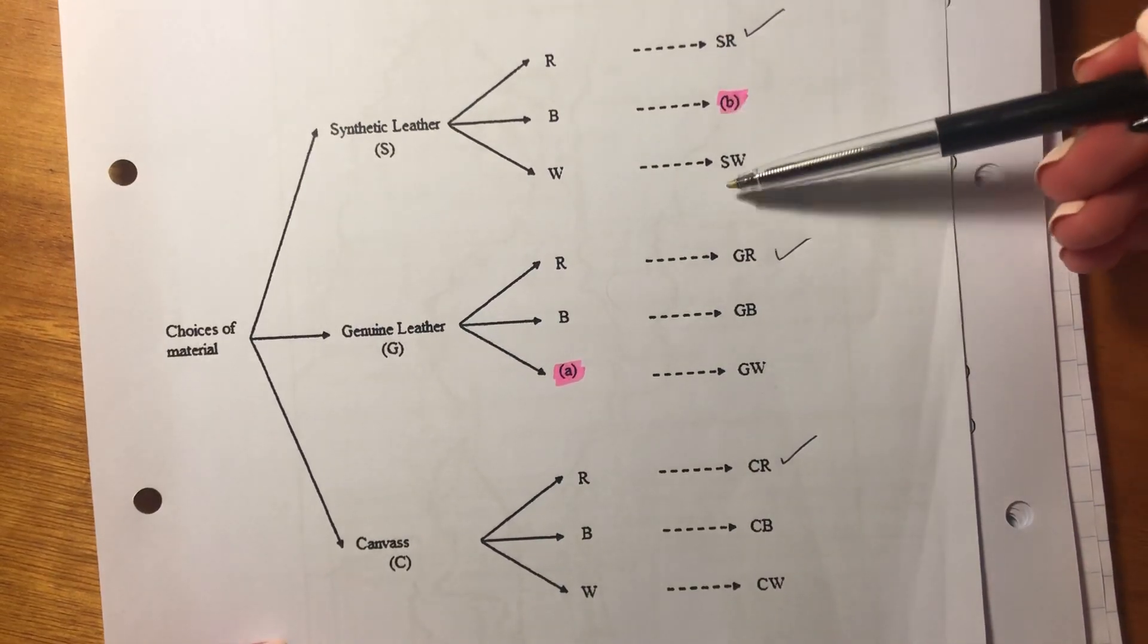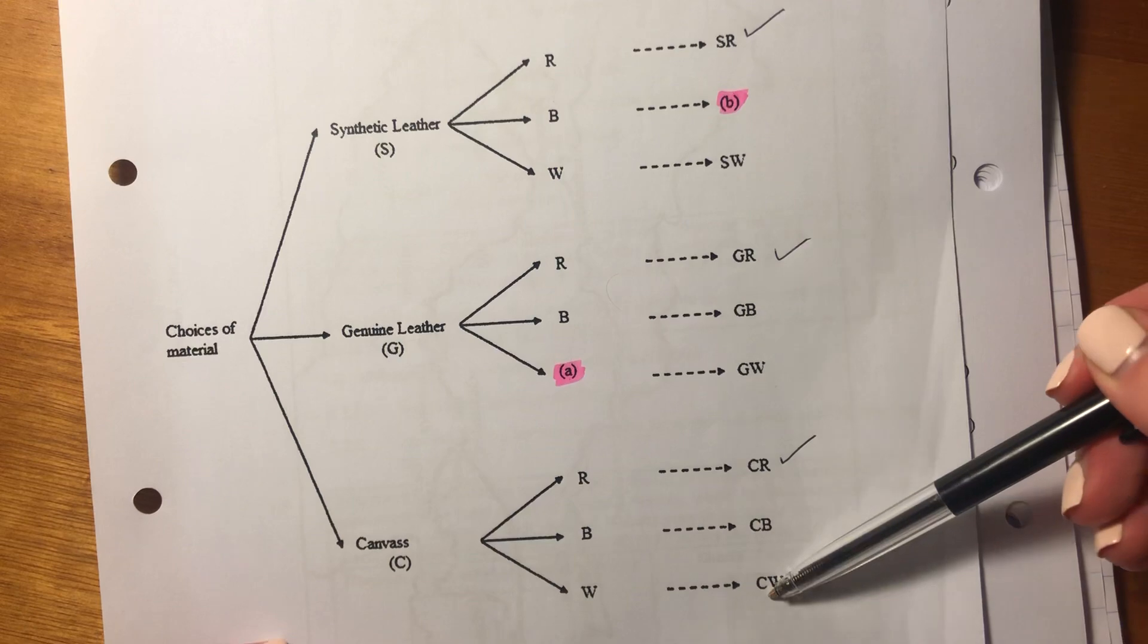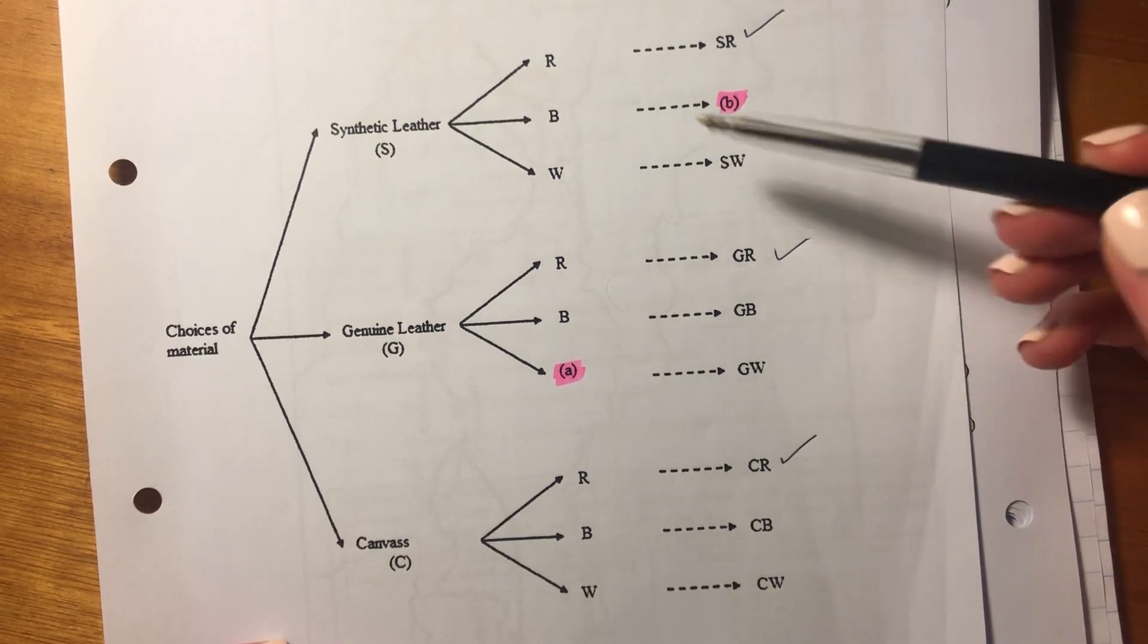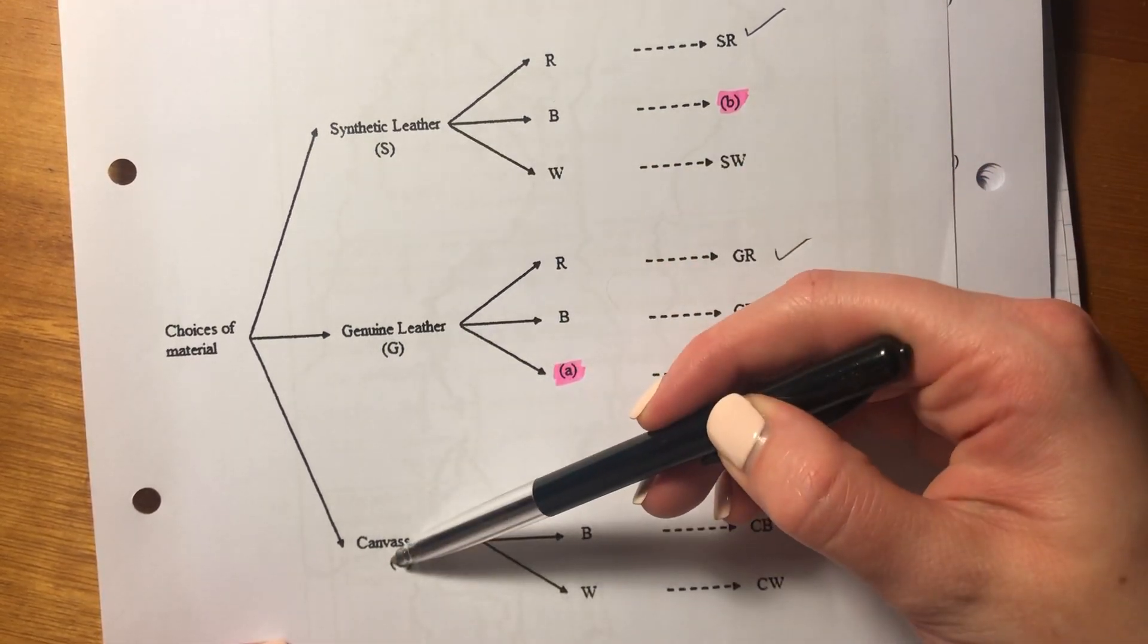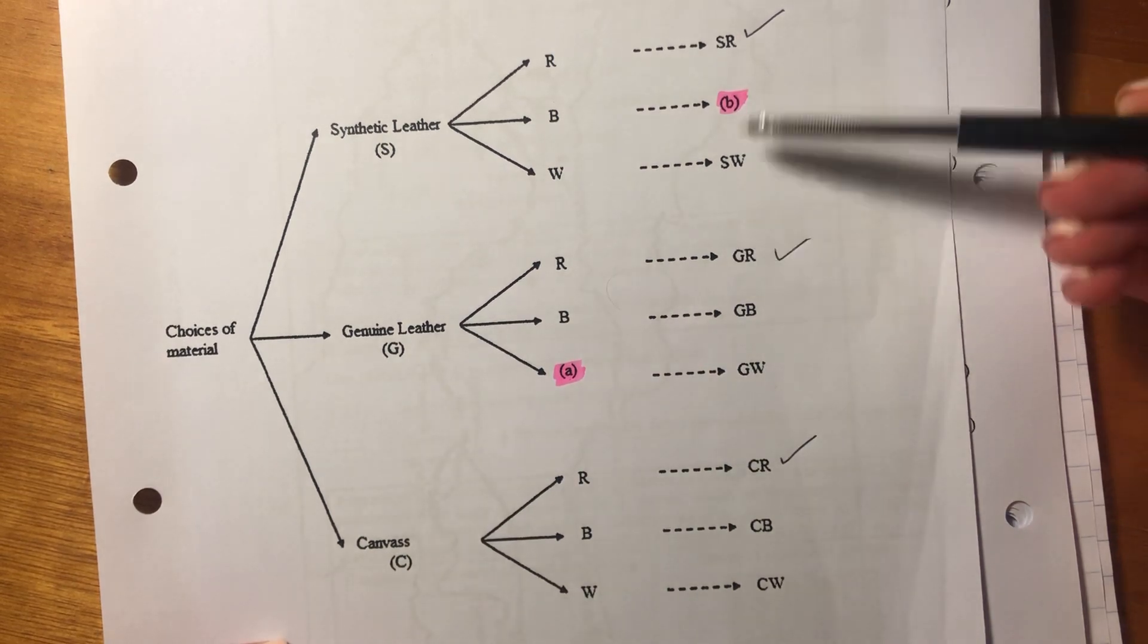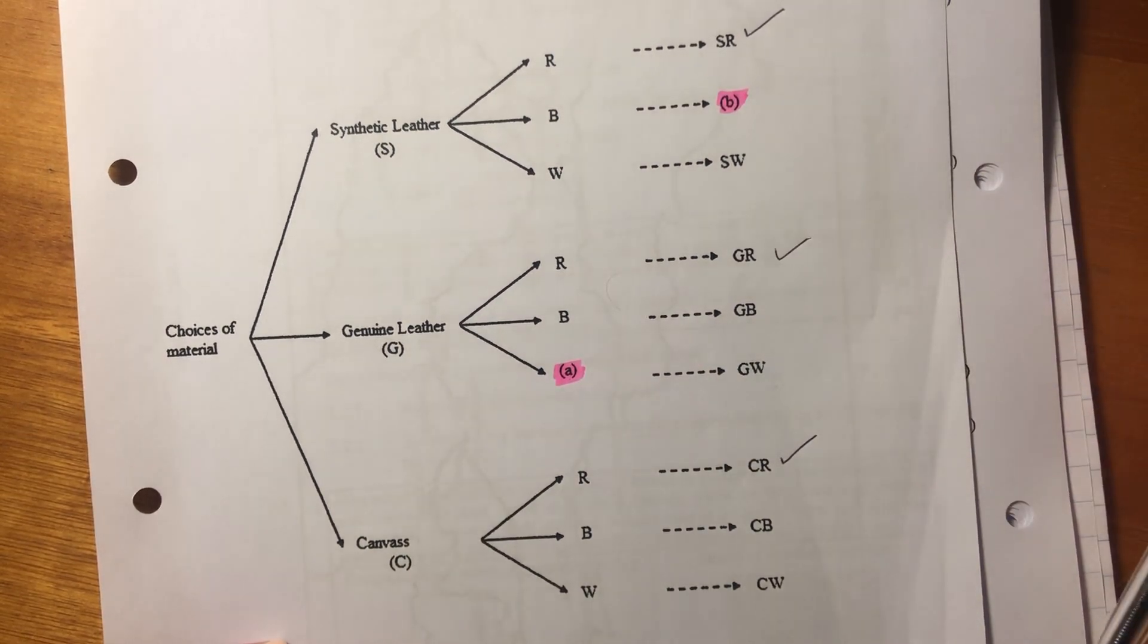Let me show you again: 1, 2, 3, 4, 5, 6. So it's the blue and the white version of the three different types of material. So we know that 6 out of the 9 are not red.